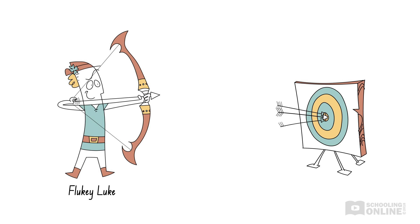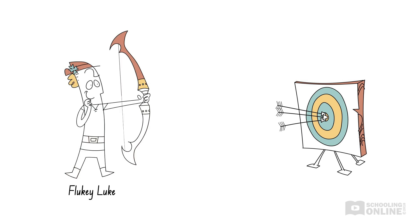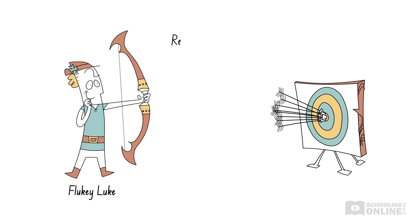He launches a second and third arrow. Wow! He emptied a full quiver of arrows and hit the bullseye every time. The magical bow represents a repeatable experimental procedure, as Fluky Luke achieved consistent results. That is, the magical bow produced similar results when used by the original investigator with the same method and equipment.